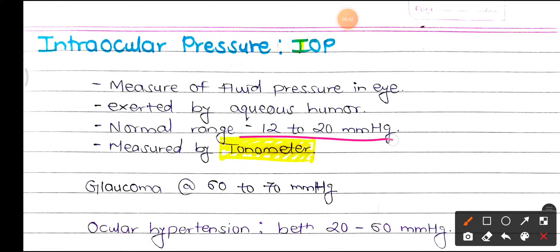It has a normal range of 12 to 20 mm of Hg and it is measured by the tonometer.